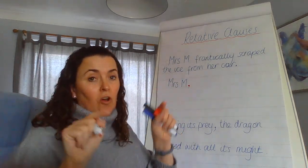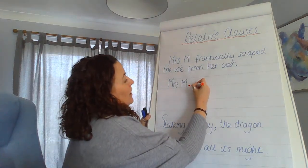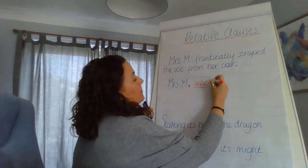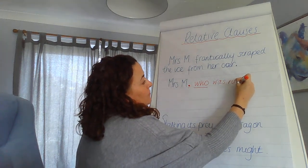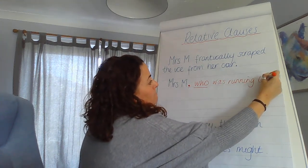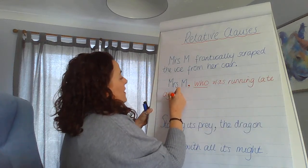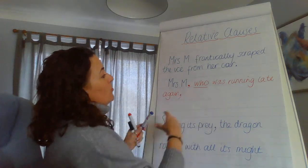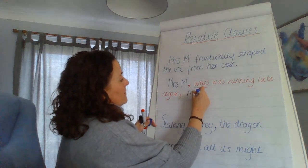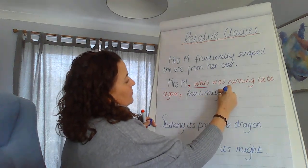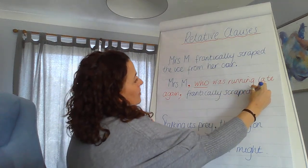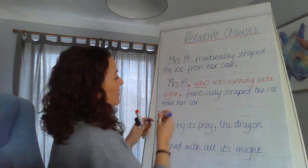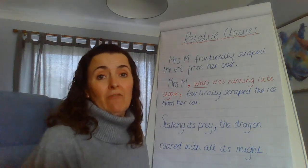When you're doing a relative clause you always put them between two commas, so 'Mrs M comma' — and I'm going to use a relative pronoun, which is 'who' — 'Mrs M who was running late again.' That is my relative clause. I put a comma at the end and then the rest of my sentence tags on: 'Mrs M, who was running late again, frantically scraped the ice from her car. Full stop.'